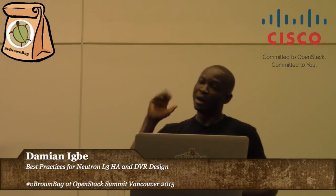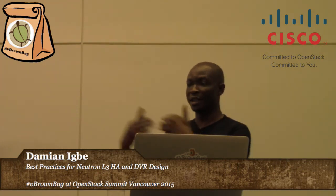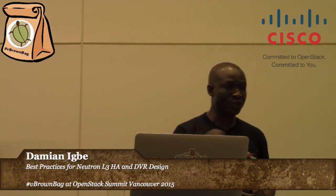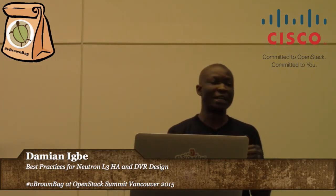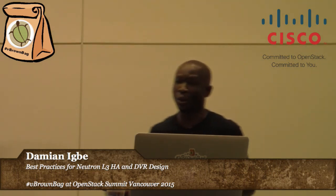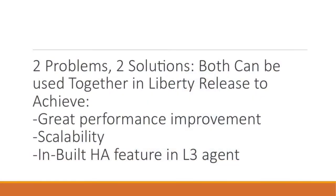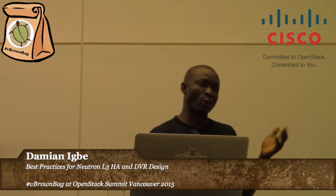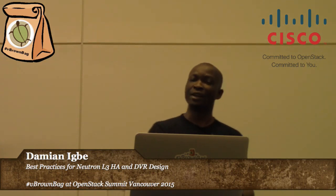In the previous talk there was a deep dive into this concept proving that the performance gains are really significant when you implement these modifications to the L3 agent. Not only that, you now have the capability to run your L3 agent in HA mode — which is really where we want to go with Neutron. Two problems, two solutions. From the Liberty release you'll have the luxury of using both together. Thanks so much — if you want more details shoot me an email, and there are deep dive presentations at this summit.